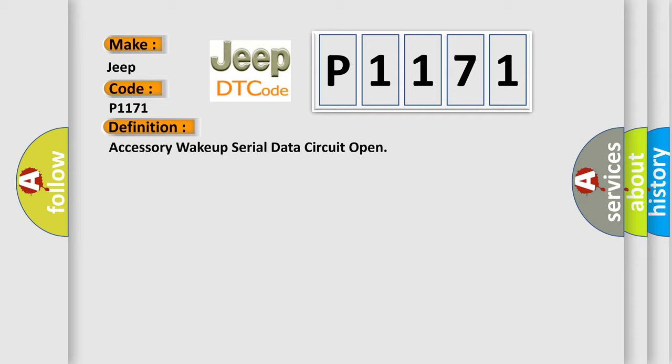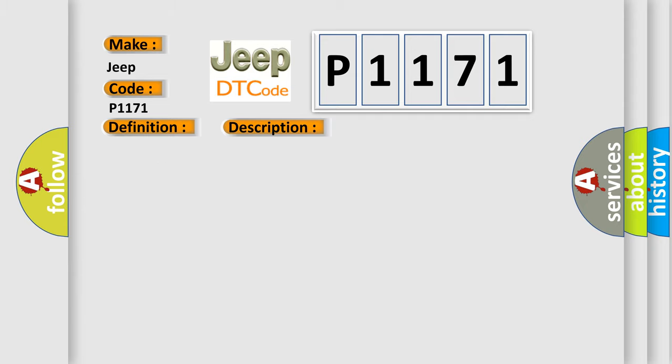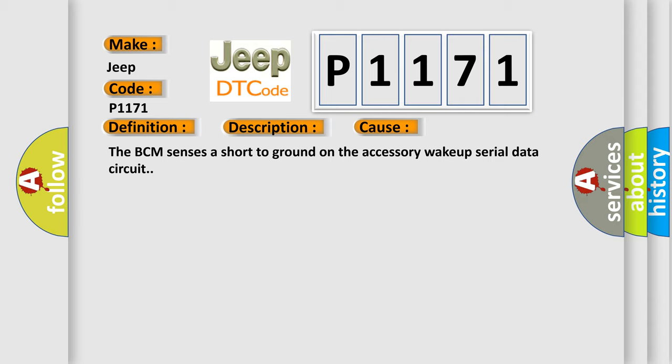Here is a short description of this DTC code. The system voltage is between 9 to 16 volts. The vehicle power mode master requires serial data communication to occur. This diagnostic error occurs most often in these cases: the BCM sensors are short to ground on the accessory wake up serial data circuit.